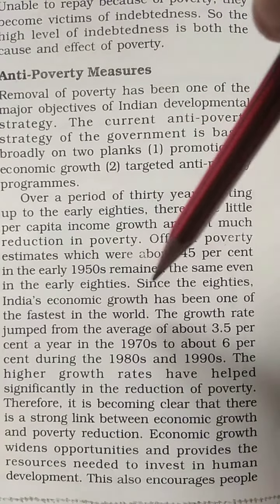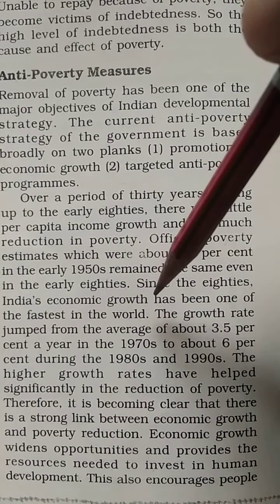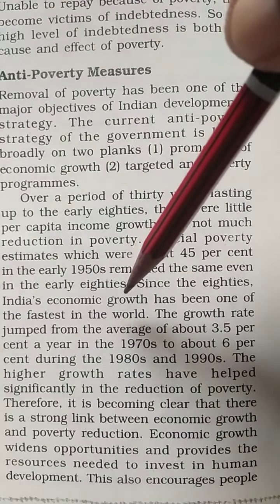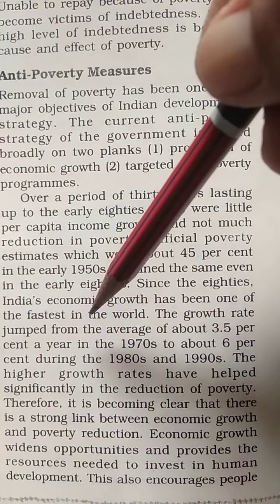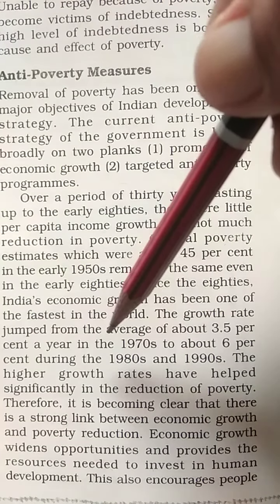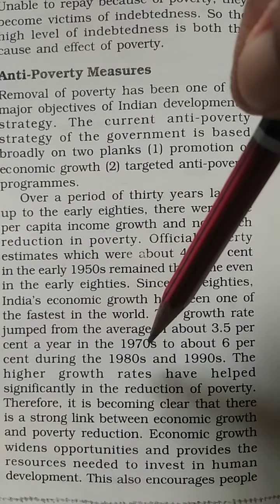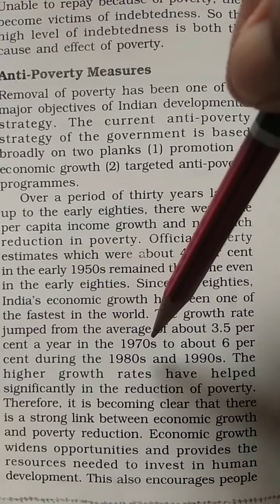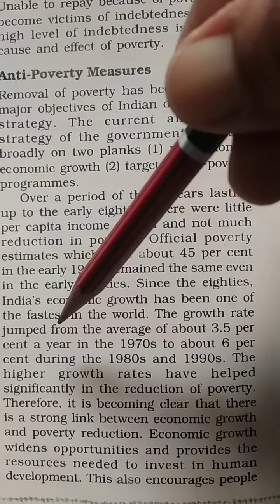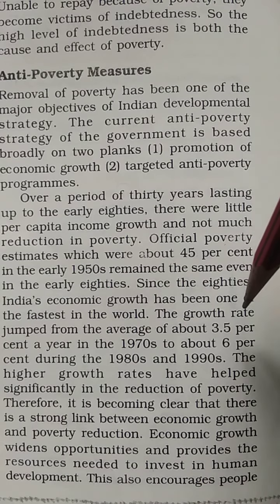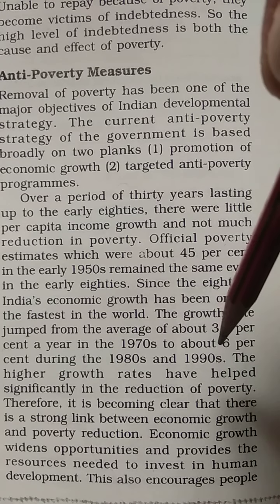Since the 80s, India's economic growth has been one of the fastest in the world — 1980s ke dashak se uske baad bharat ki arthik vriddi teji se hoi, sab se teiz thi. The growth rate jumped from an average of about 3.5 percent a year in the 1970s to about 6 percent during the 1980s and 1990s — yeh 3.5 percent se badh ke 6 percent ho gai per year.